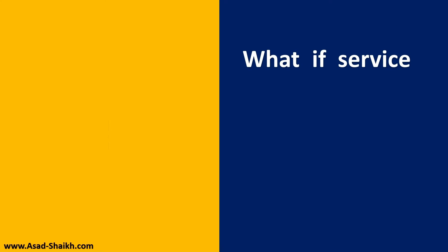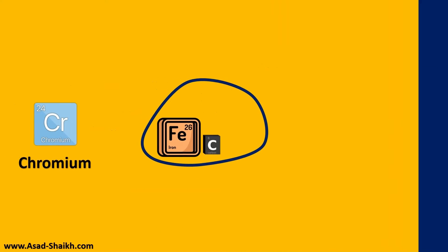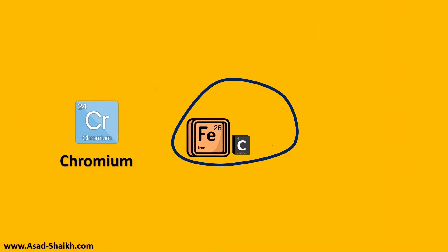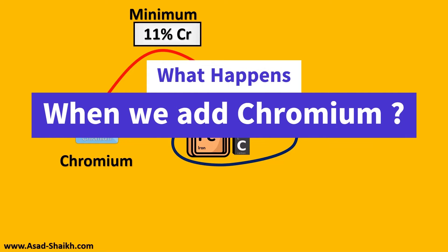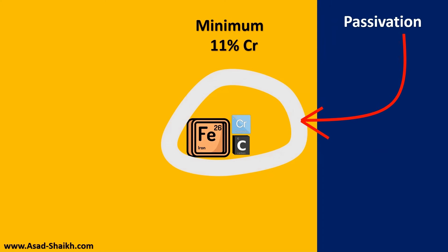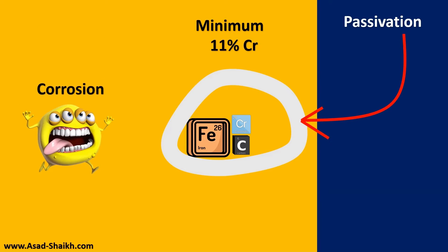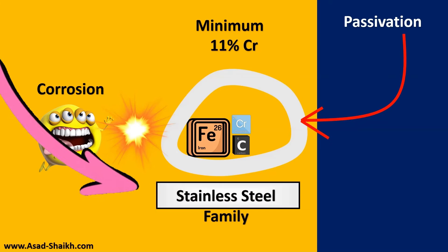What if the service is corrosive? We add another amazing element — chromium — and it should be added in a good quantity, which is at least 11%. When we add chromium, a phenomenon called passivation happens, which basically develops a film around the material. Like sunscreen protects us from sun rays, this layer protects the material from corrosion. This family of materials is called the stainless steel family.